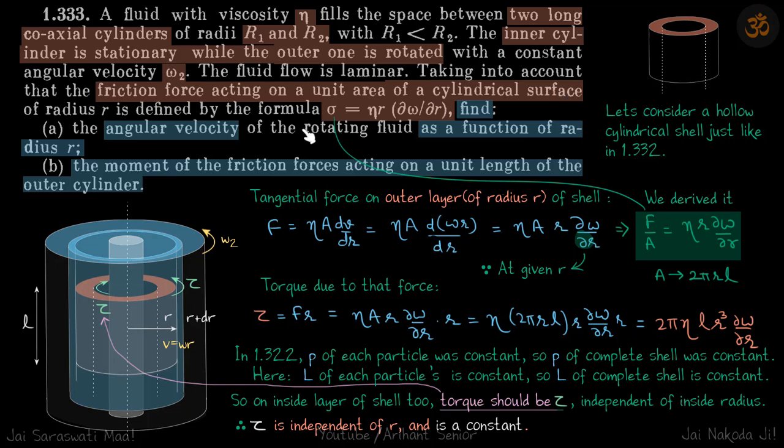So just like in the previous problem, first the problem. We are given a fluid with viscosity eta that is filled in a space between two coaxial cylinders of R1 and R2. So this is R1, this is R2 and in between that we have a liquid.